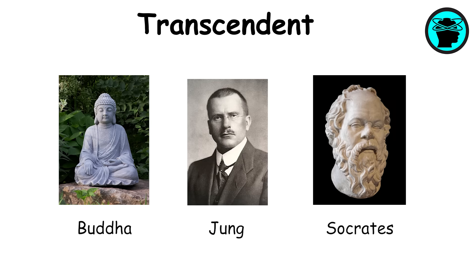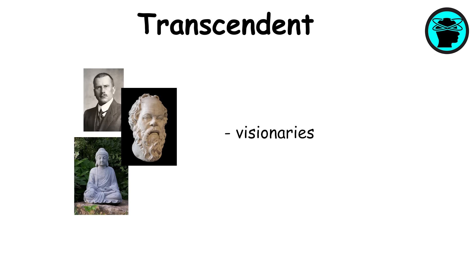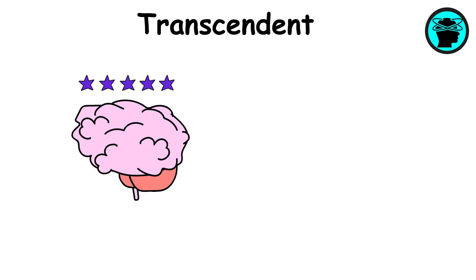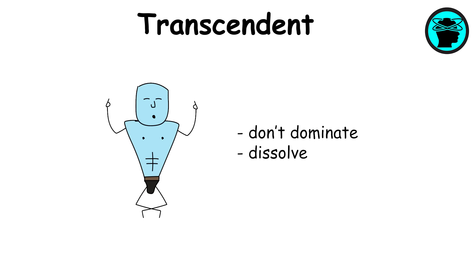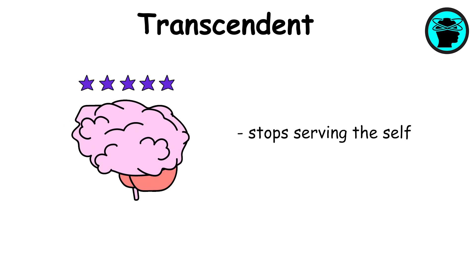Think Buddha, Jung, Socrates. Visionaries who didn't just know, they understood why we crave knowing. Transcendent intelligence isn't shiny, it's quiet, still. Often mistaken for madness, because it threatens everything we build our sense of self on. These people don't dominate, they dissolve, they guide without pushing. At this level, intelligence stops serving the self, it starts serving truth.